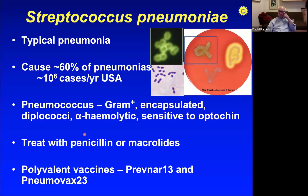Treatment of Strep pneumoniae works with virtually any antibiotic — penicillin or amoxicillin works great, as does erythromycin (a.k.a. Z-Pak or Azithromax). Nevertheless, there are plenty of strains resistant to penicillin or amoxicillin, and somewhat less but still significant resistance to macrolides. Fluoroquinolones and other broad-spectrum antibiotics remain effective.